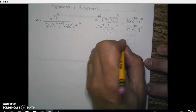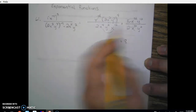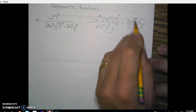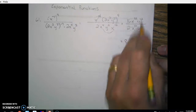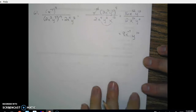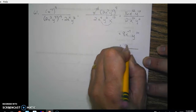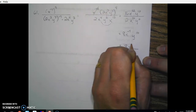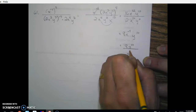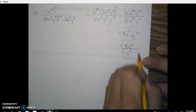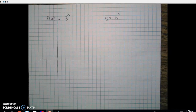Now we're dividing. Dividing the coefficients we get 8. For the like base x: 12 minus 16 is negative 4. For the like base y: 12 minus 2 is 10. Cleaning this up, we keep the 8 in the numerator, y to the 10th in the numerator, and x comes down to the denominator, so the negative 4 becomes positive 4.